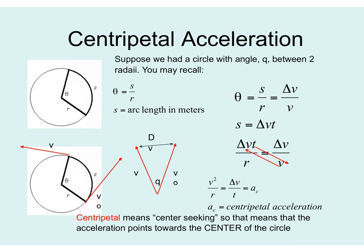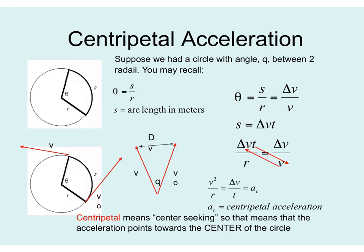Here we have a cleaner diagram showing the radius, the angle theta, and the arc length. The angle is proportional to the arc length divided by the radius, where arc length is in meters. Because that arc length is related to our change in velocity, we can substitute delta-V and velocity into the relationship. After canceling out all units, we find that centripetal acceleration equals the change in velocity divided by time, or V squared divided by R. Let's look at a few examples and apply this to problems.